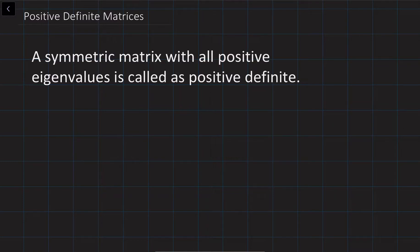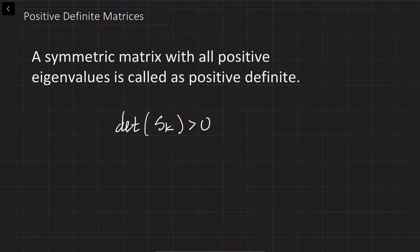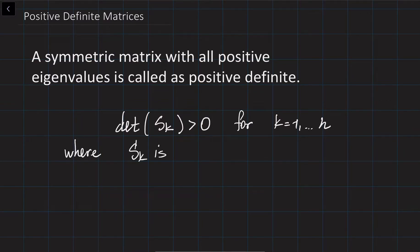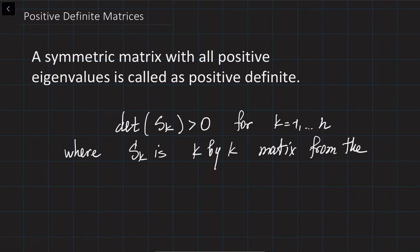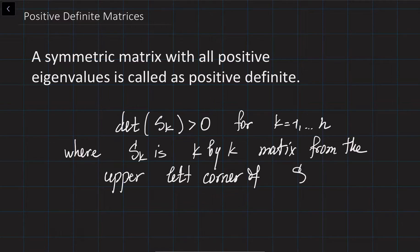If we would like to test the positive-definiteness of a symmetric matrix, we need to make sure that the determinant of S_k is going to be more than zero for all values of k from 1 to n, where S_k is going to be the k by k matrix from the upper left corner of the given matrix S.